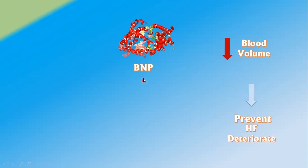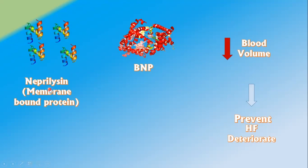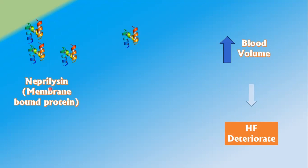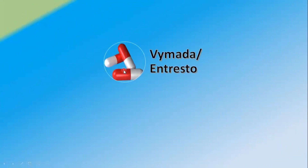Coincidentally, when BNP is doing its job of reducing blood volume and preventing heart failure deterioration, a substance produced by the body named Neprilysin does not allow BNP to do its job — it goes and starts degrading the BNP. Since BNP is degraded, instead of reducing blood volume, blood volume starts rising up. This leads to volume overload in the arteries, more blood reaches the heart, and heart failure again starts deteriorating. So it is very important to preserve BNP in order to protect the heart, and we must prevent Neprilysin from degrading BNP.